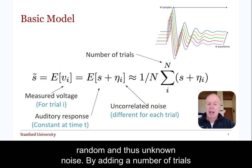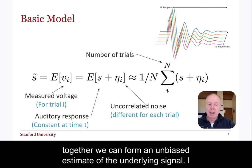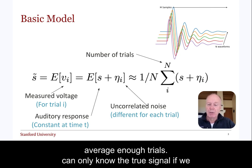By adding a number of trials together, we can form an unbiased estimate of the underlying signal. I emphasize the word estimate because we can only know the true signal if we average enough trials.